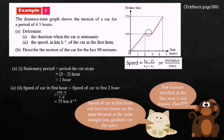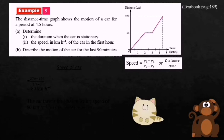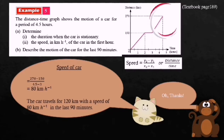Describe the motion of the car for the last 90 minutes. The last 90 minutes is one and a half hours. Speed of car equals 270 minus 150 divided by 4.5 minus 3, which equals 80 kilometers per hour. To describe the motion, we need the distance, speed, and time. So the car travels 120 kilometers with a speed of 80 kilometers per hour in the last 90 minutes.